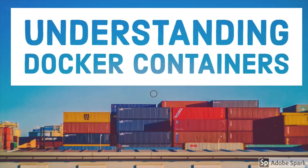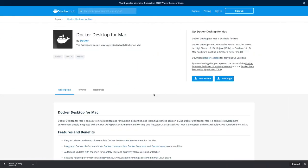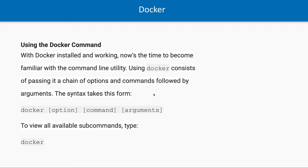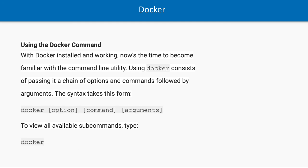Once the Docker installation is done you can run these commands. Running 'docker' or 'docker --version' will show you that Docker has been installed and the Docker daemon process is running. If you run this and nothing is happening, it means there is something wrong with your Docker installation.